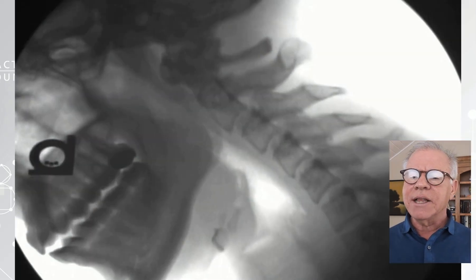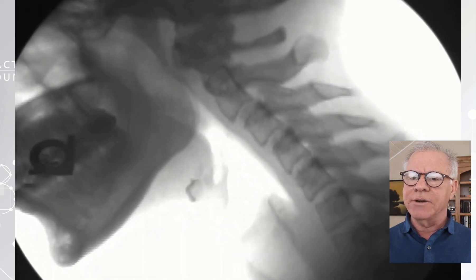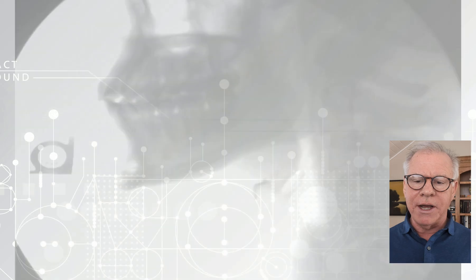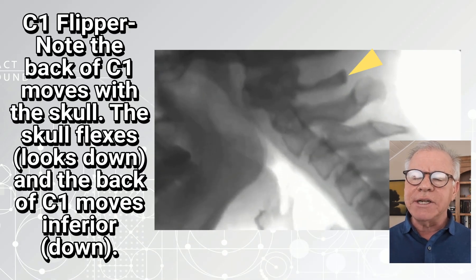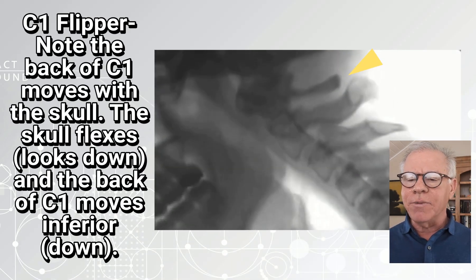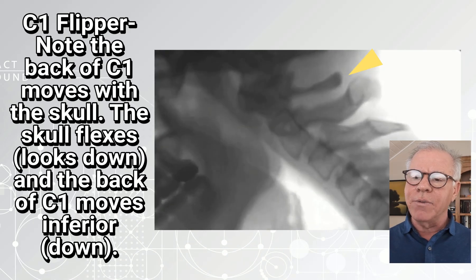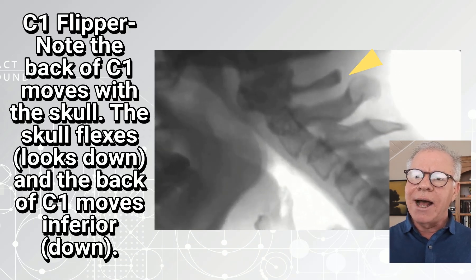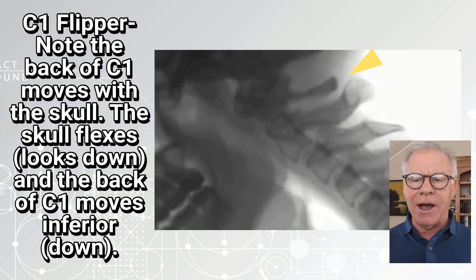So basically, this is a DMX from this week. There's some abnormal motion of C1 here. If we slow it down, the arrow is pointing to the back of C1, and you can see the back of C1 go up and down as the patient's head goes up and down.